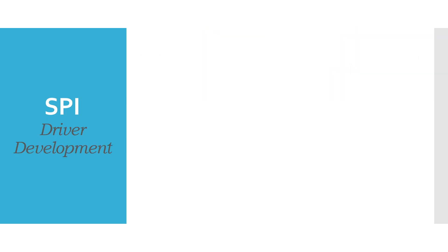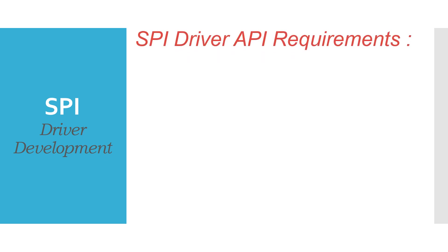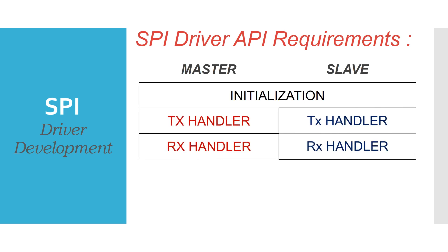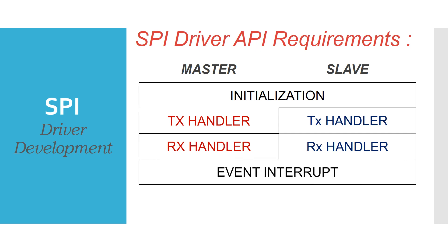Let's try to understand the API requirements we need to implement as part of our SPI driver. First, we need an API to initialize the SPI peripheral for both master and slave nodes, including configuring SPI mode, clock settings, and more. Then we need a set of APIs to handle transmission and reception of data for master and slave. Finally, we need an event interrupt handler to handle SPI transmit and receive interrupts.